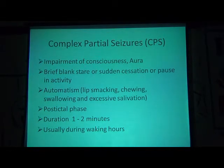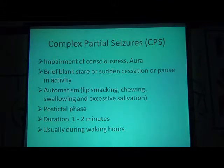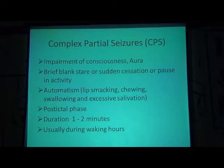The next seizure type is complex partial seizure. In complex partial seizures, consciousness is always impaired and the patient may present with an aura. There is a brief blank stare or sudden cessation of activity, and automatisms are present. Automatisms are complex motor activities that occur while the patient's sensorium is altered, followed by an amnestic phase — the patient cannot recall what happened. Automatisms may include lip-smacking, chewing, swallowing, or excessive salivation. Duration is usually one to two minutes, typically occurring during waking hours.